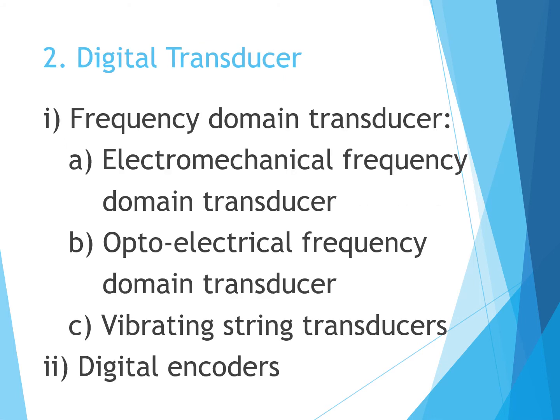The second classification is digital transducers, which have two types: frequency domain transducers and digital encoders. Frequency domain transducers include electromechanical frequency domain transducers, opto-electrical frequency domain transducers, and vibrating string transducers.